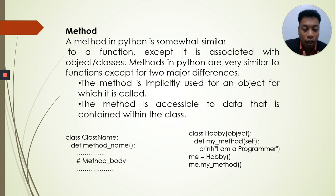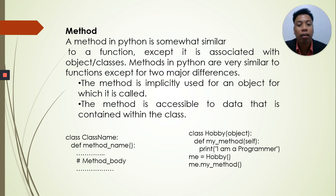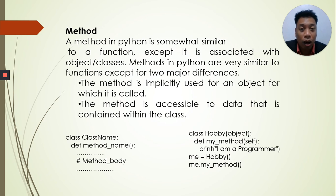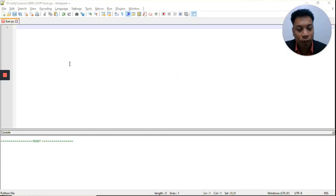Looking at our example, we created a class called Hobby. Inside the class, we created a function — and if you create a function inside the class, it will be a method. Remember, a method is a function inside the class, that's why we use the keyword def. In our case, we use the method my_method, and it prints 'I am a programmer.' Below, we created an object: me equals Hobby. Then me.my_method — the object calls the method inside the class.